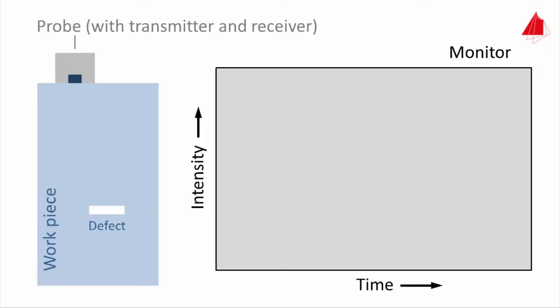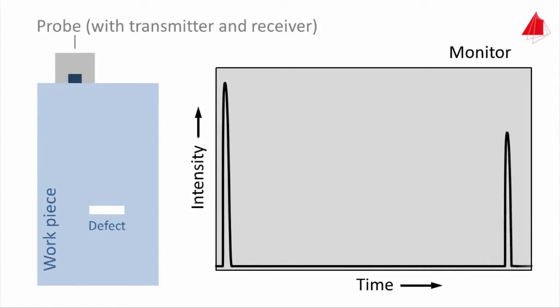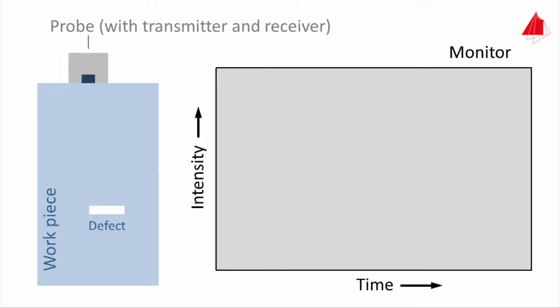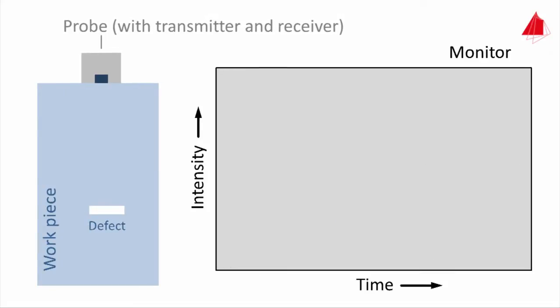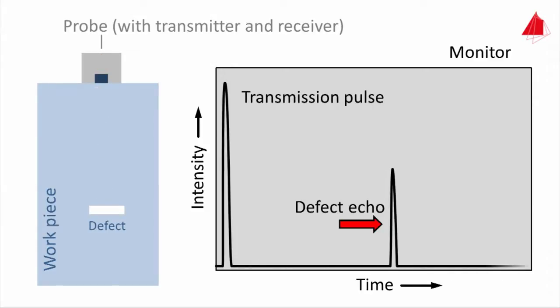With the probe at a place free from defects, only two signals may be seen on the monitor: the transmission pulse and the echo resulting from the lower surface of the workpiece, termed back wall echo. Moving the probe towards the right leads to an additional echo created by the defect. Even further towards the right, only the defect echo is visible apart from the transmission pulse.